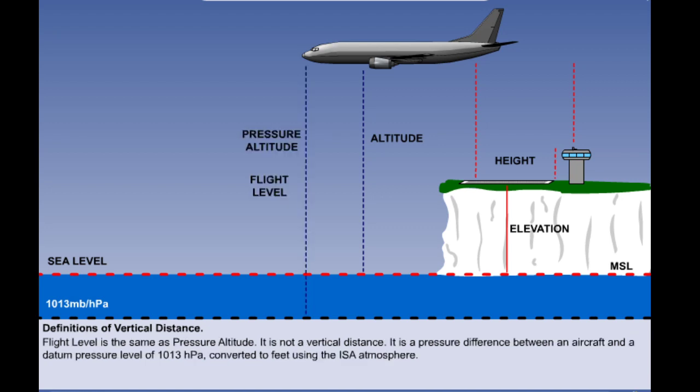Flight level is something different. Flight level is also known as pressure altitude. It is a pressure difference between that experienced by an aircraft and a datum pressure level of 1013 hectopascals. It is converted using the ISA atmosphere relationship and expressed in feet. But it is a pressure relationship and its true vertical distance will vary according to the temperature at the time. Under ISA conditions that true vertical distance will be the same as the flight level or pressure altitude.